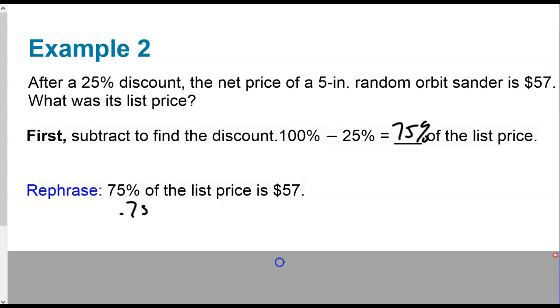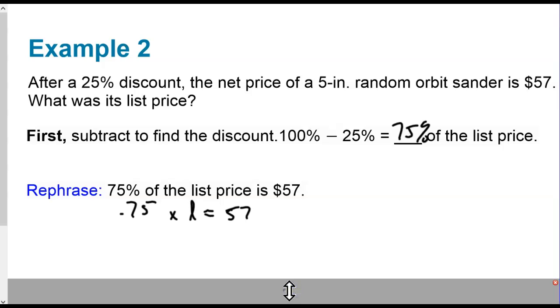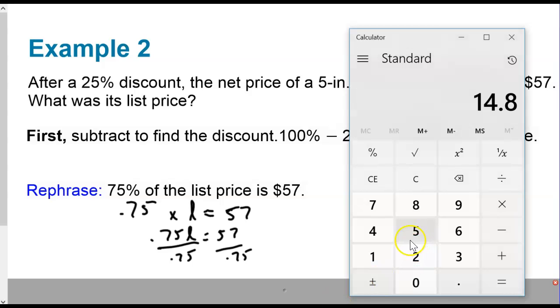So then we can go ahead and rewrite that as 75% of the list price is $57. And so we'll write this as 0.75 times the list price, which we don't know, so we'll call that L, is or equals $57. We'll get 0.75L equals 57. We want to isolate that variable, so we'll divide both sides by 0.75. And we get $76.